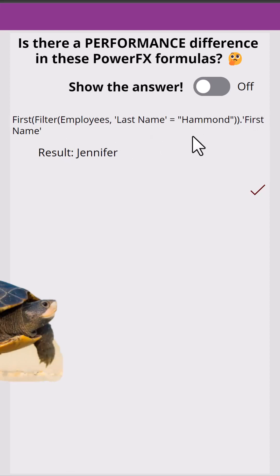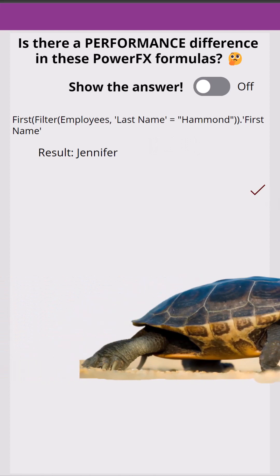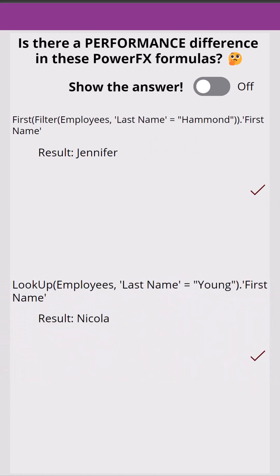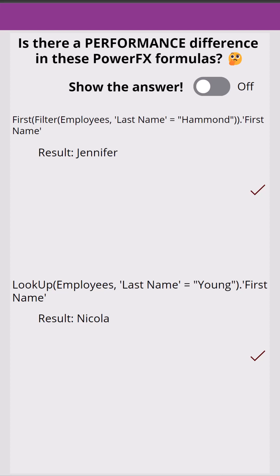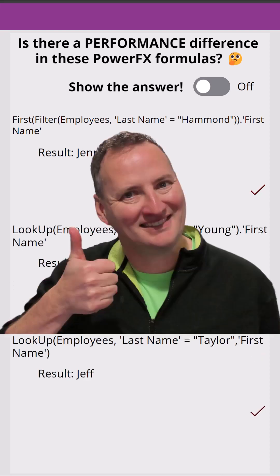Then there's my way of doing it: we use the LookUp function, which gets the first record that matches a criteria of LastName equals 'Young', and then we do dot FirstName — the column off of that — and that returns 'Nicola'. That looks great.